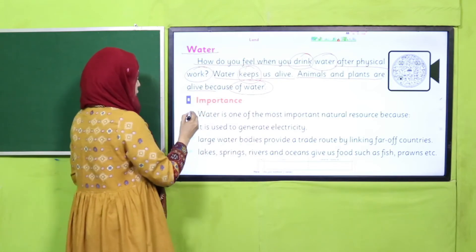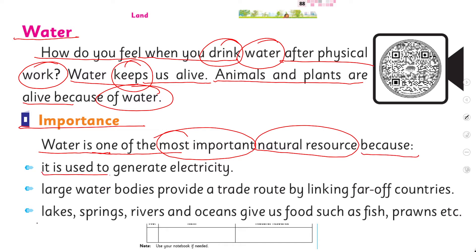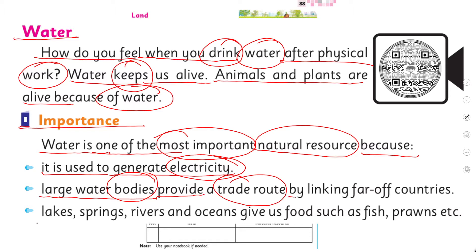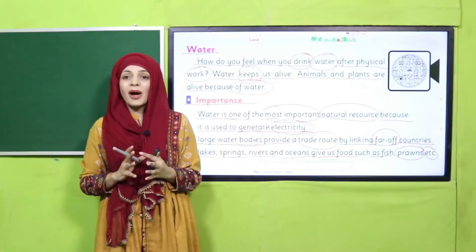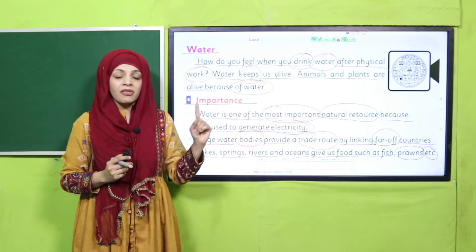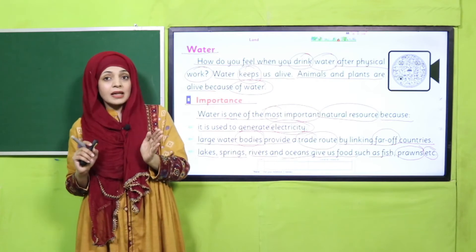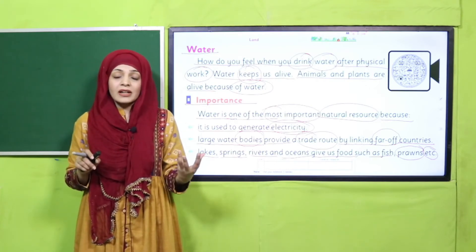Let's quickly read more. 'Water is one of the most important natural resources because it is used to generate electricity and energy. Large water bodies provide a trade route by linking far-off countries. Lakes, springs, rivers, and oceans give us food such as fish, prawns, etc.' So first, water is used for drinking, washing, and bathing — that is what we use water for most on a daily basis. Next, it is used to generate electricity. From water, electricity is generated.